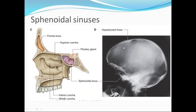Next is the sphenoidal air sinus. It is a paired paranasal sinus located within the body of the sphenoid bone, lying above and behind the nasal cavity. Unlike other sinuses, both sphenoidal sinuses are asymmetrical in size. The average dimensions are approximately 2 centimeters in vertical and anteroposterior diameter, with the transverse diameter slightly less at about 1.5 centimeters.